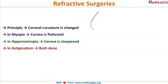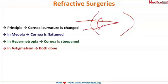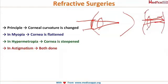In myopia, the eyeball is too long, so light rays converge too much and focus in front of the retina. To correct this, the cornea is flattened so that the rays diverge slightly and converge onto the retina, eliminating the premature convergence.